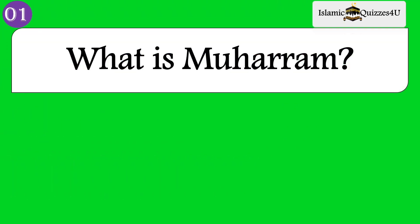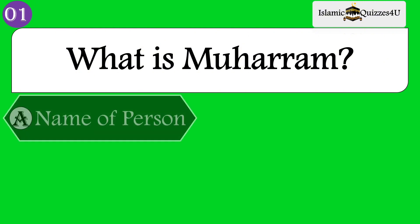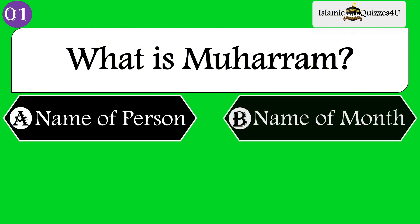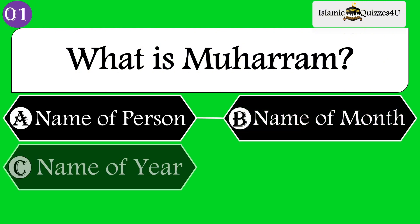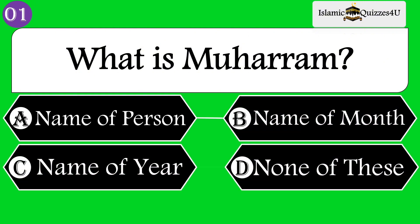Question number 1: What is Muharram? Option A: Name of person. Option B: Name of month. Option C: Name of year. Option D: None of these.